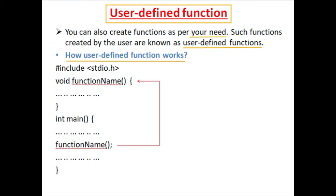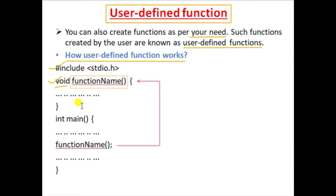Here is the syntax of a user-defined function. First we include the header file stdio.h. Then we define the function: first comes the function type, which may be int, void, or char. I use void here. Then comes the function name — you can use any name. Inside the parentheses you can declare variables if needed; it is not mandatory. Then comes the function body inside curly braces where all the functional tasks are performed.